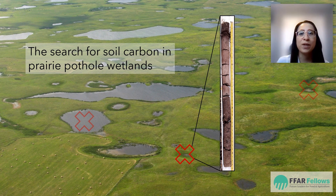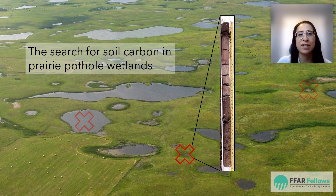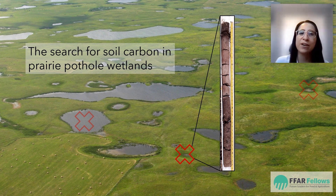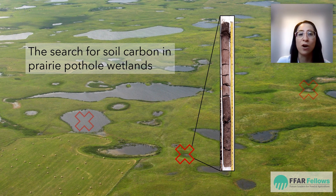Through my research I'm building a soil carbon treasure map for the Canadian prairies and the upper Midwest United States, in an area known as the prairie pothole region. This area features a unique type of wetland known as prairie potholes or sloughs, that were formed after the glaciers retreated over 10,000 years ago.